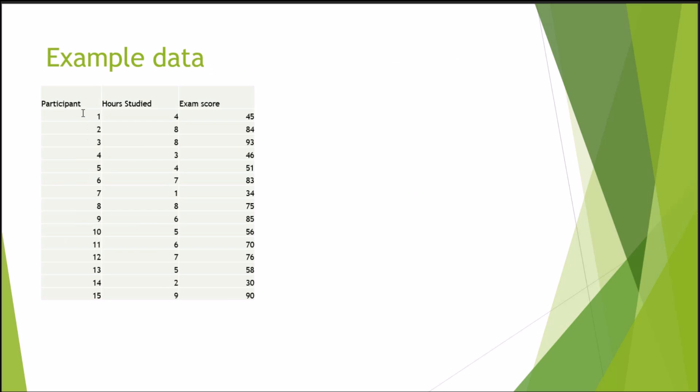Some example data. I have 15 participants and hour studied as one variable and exam score as the other variable. I want to determine if there's a relationship between hour studied and the exam performance. Now, hour studied may seem like a continuous variable, but because there's less than 15 points, it would generally be considered ordinal. So 15 points or more on a scale and it is continuous. Less than 15, it is ordinal, generally.